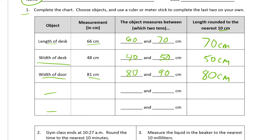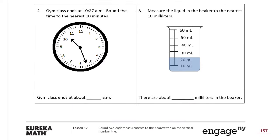Number two: gym class ends at 10:27 a.m., round the time to the nearest 10 minutes. So this right here is 27, and that's going to be in between 30 minutes after and 20 minutes after. And 27 is only three away from 30 but seven away from 20, so it ends at about 10:30 a.m.